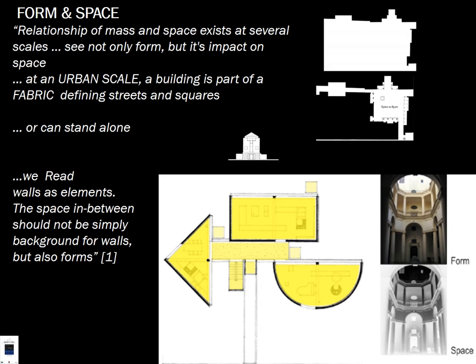Looking at a floor plan, the relationship of mass and space exists at several scales — not only the form, but its impact on space. At an urban scale, a building is part of the fabric defining streets and squares. We read the walls as elements, and the space in between should not simply be background — it should also be read as form. Look at the negative space as well as the positive space.